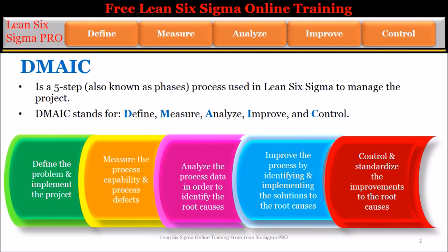DMAIC is a five-step process, also known as phases, used in Lean Six Sigma to manage the project. DMAIC stands for Define, Measure, Analyze, Improve, and Control.